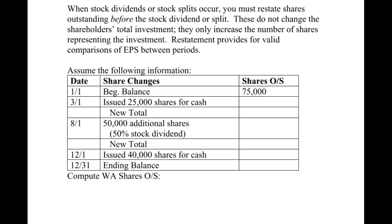So remember, with basic earnings per share, you're asking yourself on the numerator: is there a preferred stock? And if so, do I need to subtract that dividend? On the denominator, you're asking: are there actual stock transactions? If so, I need to calculate the weighted average shares outstanding.